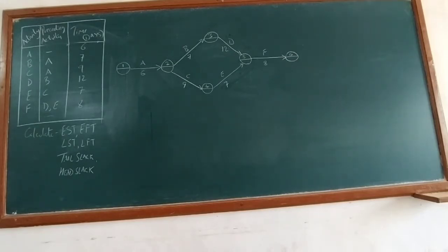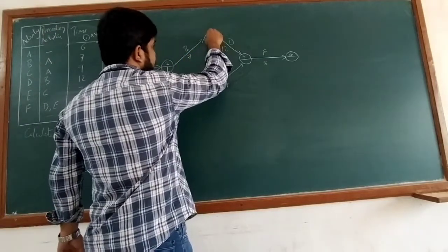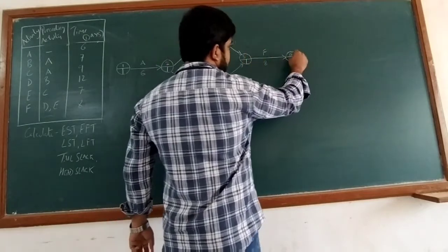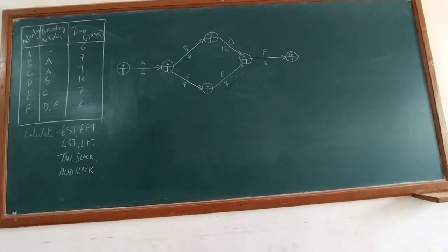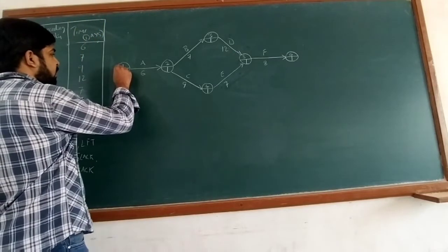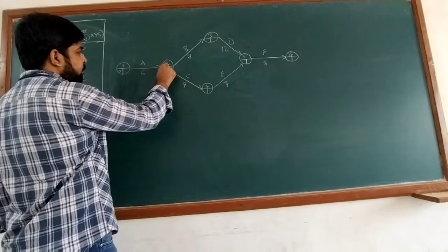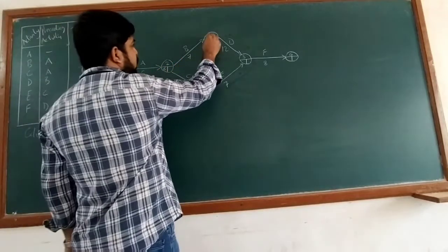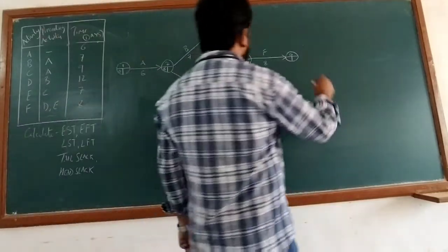Now let's identify the paths in the network. We divide every node into two halves. Starting the forward pass: node 1 has value 0 since activity A has no preceding activity. Then 0 plus 6 gives 6 at node 2. Then 6 plus 7 gives 13 at node 3. Then 13 plus 12 gives 25 at node 5. And 25 plus 8 gives 33 at node 6.